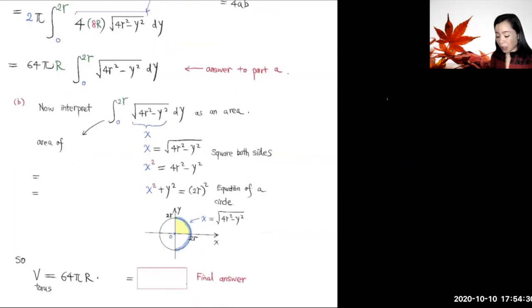Now part b. We can interpret this integral here as an area. This is an integral with respect to y, so we let x equal √(4r² - y²). Square both sides, we get x² = 4r² - y². Move the x² and y² together, we get x² + y² = (2r)².